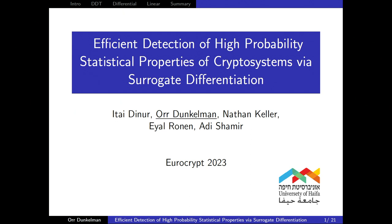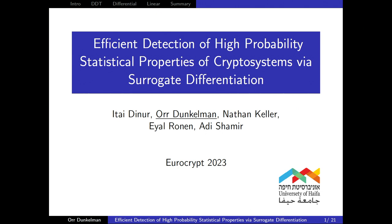Welcome to the second part of the block cipher cryptanalysis session. We have the presentation of the paper 'Efficient Detection of High Probability Statistical Properties of Cryptosystems via Surrogate Differentiation' by Orr Dunkelman, Natan Keller, Ayal Ronen, and Adi Shamir. This is a joint work and the talk is given by one of the co-authors.